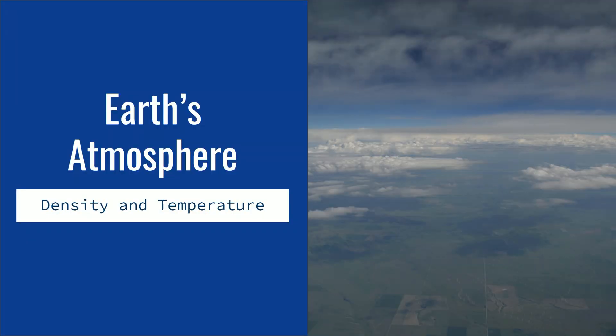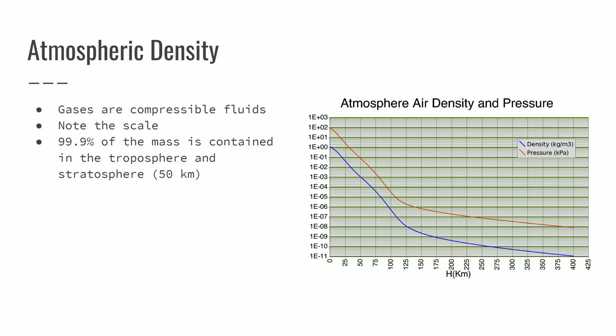So the first thing I want to talk about is the Earth's atmosphere. The Earth's atmosphere is what allows the ballooning to actually happen, and it's where the ballooning happens. So the very first component of that, which is key to the balloons operating in the way that they do, is that gases are compressible fluids. So if we look at this chart here, we can see the atmospheric density and pressure in relationship to altitude. So you can see that there's also a log scale here, so the density and pressure are both decreasing in a linear fashion on the log scale. So that means they're decreasing exponentially.